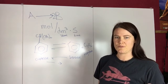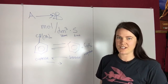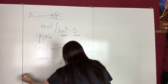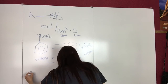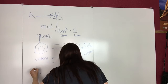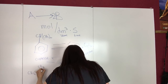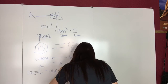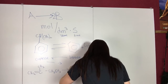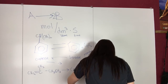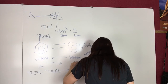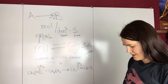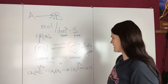The other type of reaction you can have is isomerization, and that's where a chemical changes its structure into something else. You can see that this chemical is changing into this one — so this is isomerization.